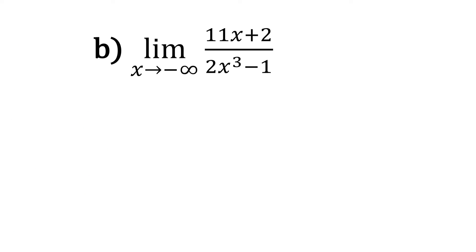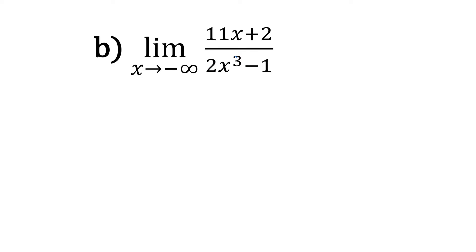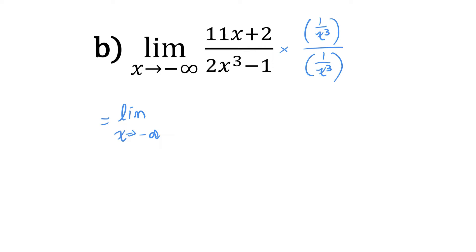Let's try part B using the same method. The limit as x approaches negative infinity. I look at the highest power of x in the denominator and divide the top and bottom by that highest power. So I'm going to multiply the top by 1 over x cubed and the bottom by 1 over x cubed. That gives us the limit as x approaches negative infinity of 11 over x squared plus 2 over x cubed, all over 2 minus 1 over x cubed.